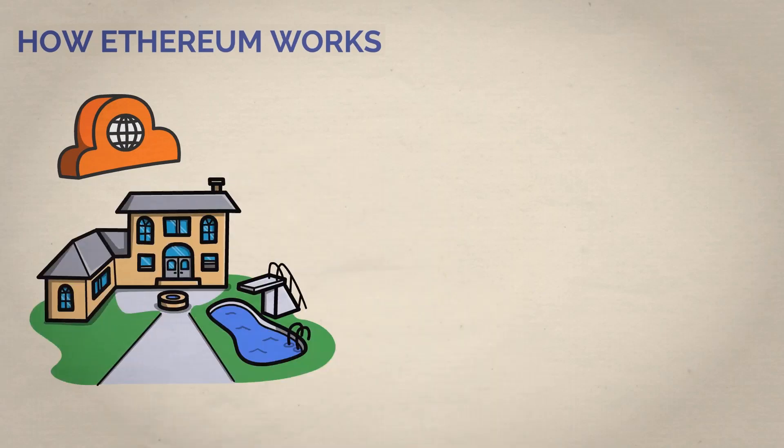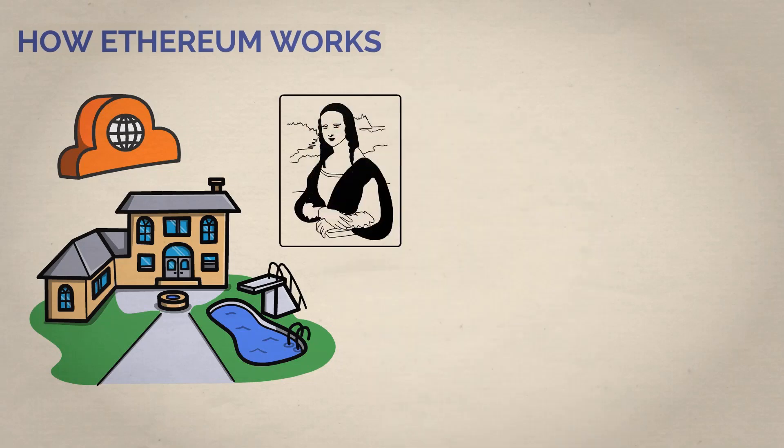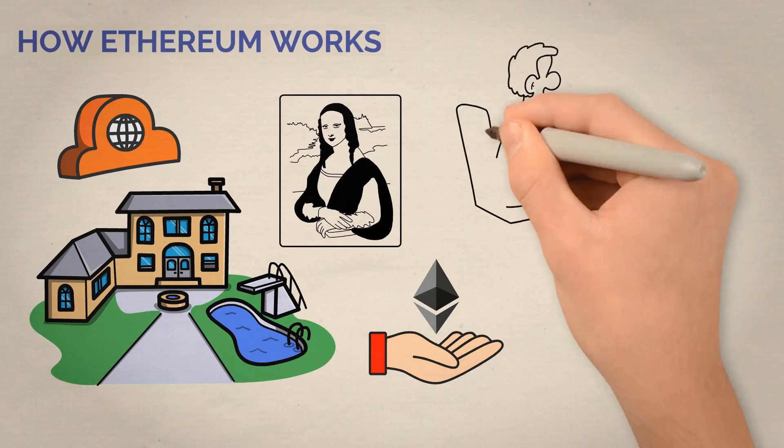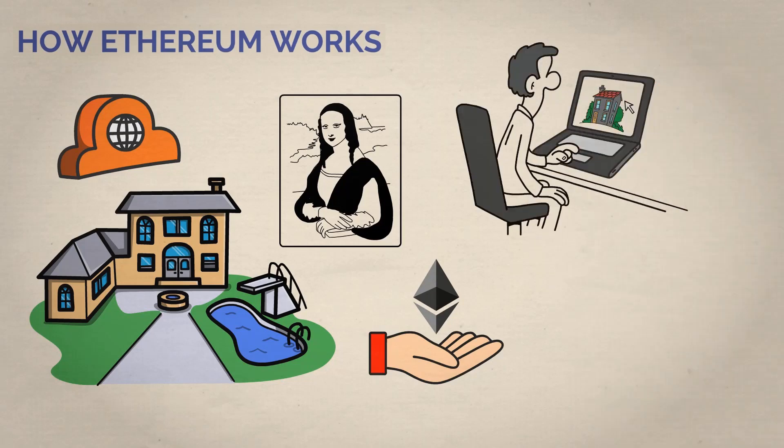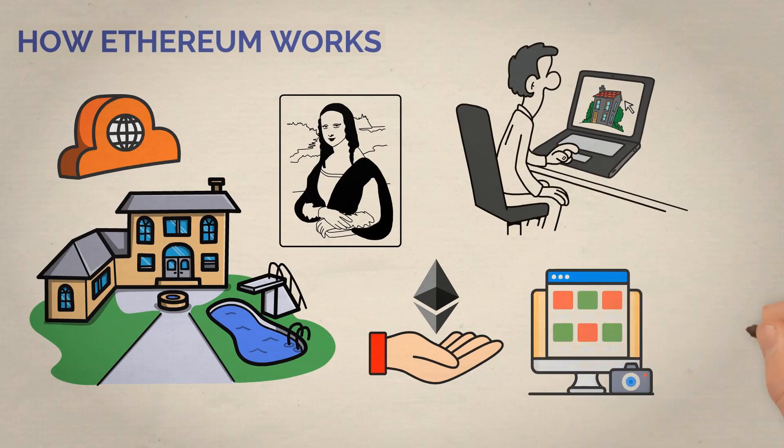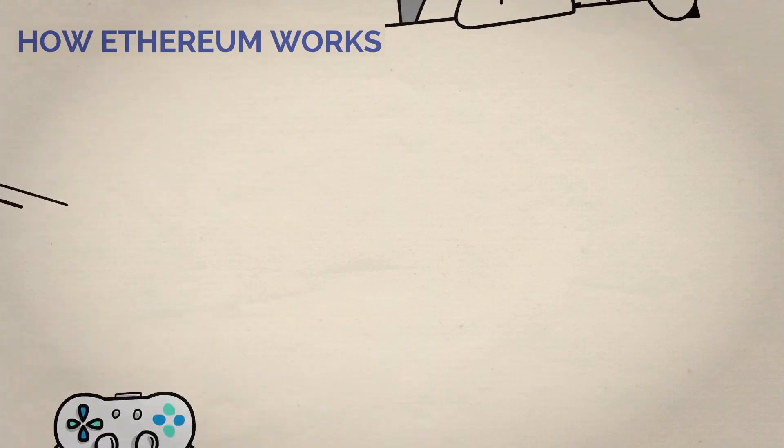Let's say you want to buy a virtual house on the Ethereum network, or a unique item like the famous Mona Lisa painting as an NFT. You would need to pay a fee in Ether. And it's not just for buying virtual real estate. You can do all sorts of things with it, like creating your own digital collectibles, or even your own games and programs that run on the Ethereum network.